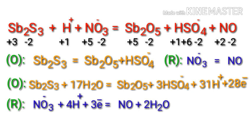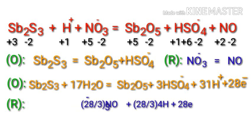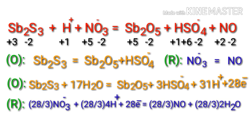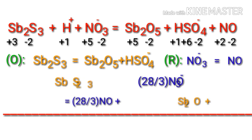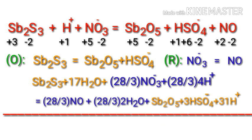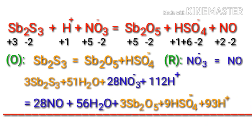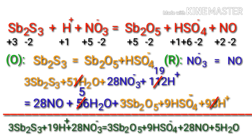We need 28 electrons, not 3. So to get 28 electrons, multiply the equation by a coefficient of 28/3. Now add both half-reactions together and cancel the same terms on each side. Then multiply the entire equation by a coefficient of 3 on both sides, and cancel the same terms again. The equation is now balanced.